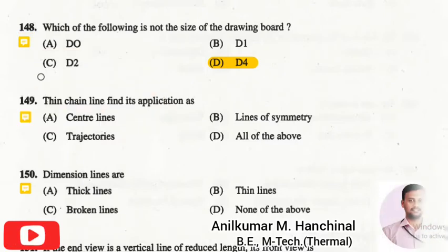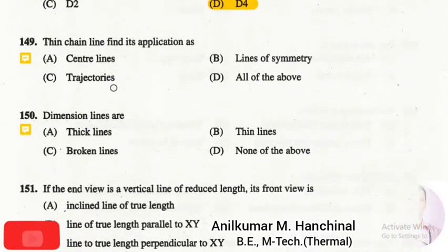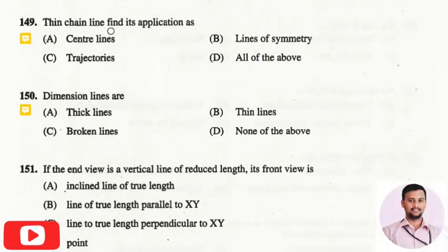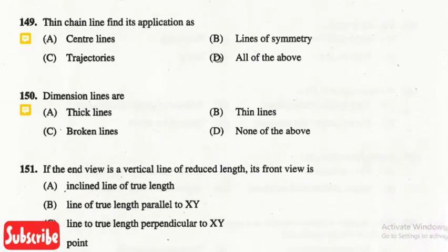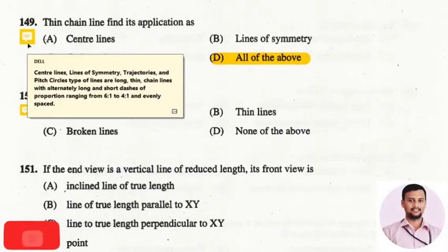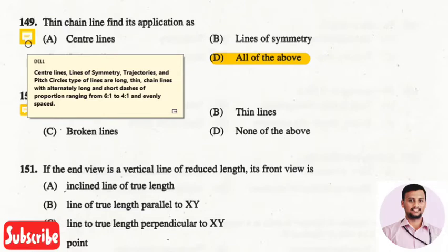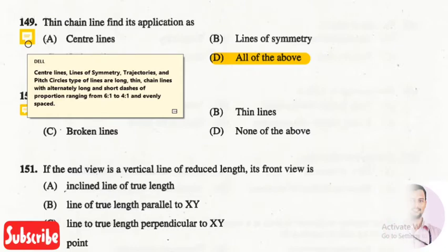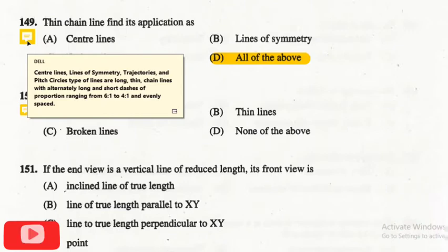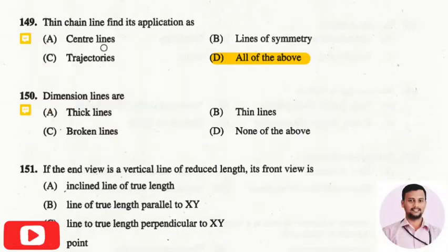The next question is: the thin chain line finds its application as? The right answer is all of the above. Center lines, line of symmetry, trajectory, and pitch circles — these types of lines are long thin chain lines with alternately long and short dashes in a proportion range of 6:1 or 4:1, evenly spaced.